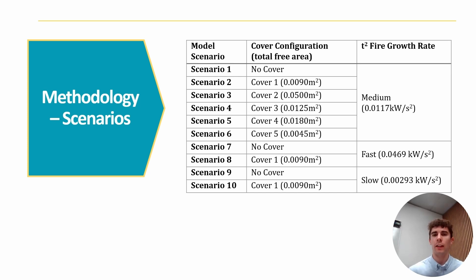We didn't want to just look at the cover configuration, though. We were keen to see the dependence of the results on fire growth rate. And typically, particularly in New Zealand, a T squared fire growth rate is applied as part of the performance based approach. And so we also investigated the slow, medium, and fast T squared growth rates to see how these impacted results. And the result of this being the 10 scenarios that we looked at.